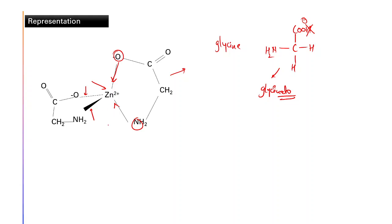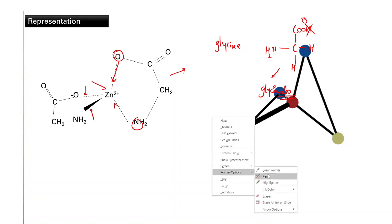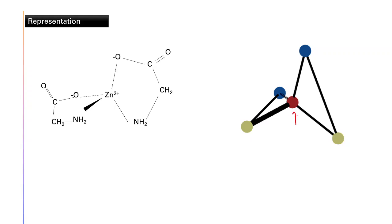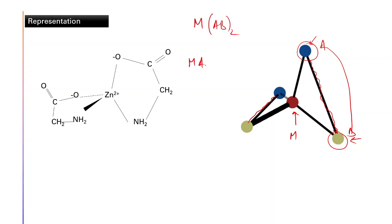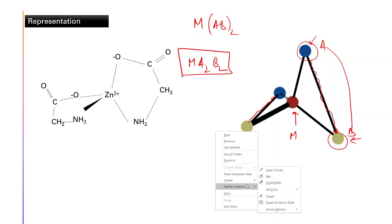So in how many ways can this complex be formed? With the same Zn²⁺ and the same two glycinato ligands, how many different molecules are possible? We will represent this using colors: the red sphere is the central metal ion, and the unsymmetric bidentate ligand has two different colored ends. This part is connected to that part — let's call them A and B. That's why we write MAB₂, not MA₂B₂, which would be the case if there were no connection between A and B.